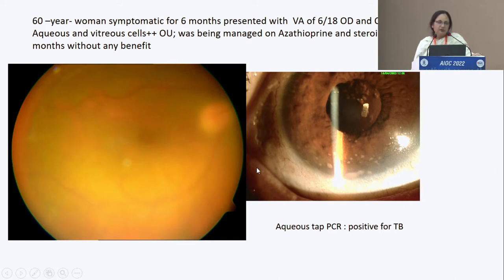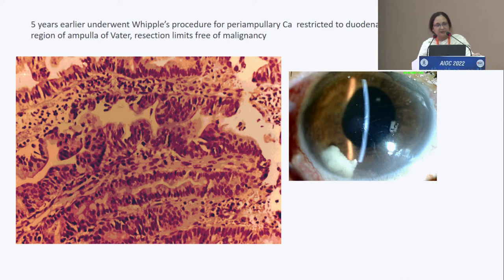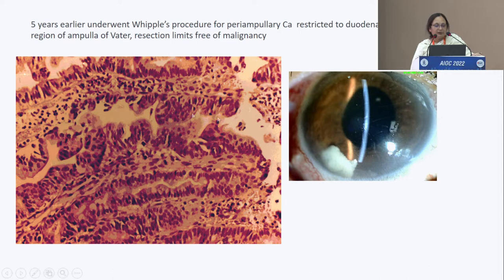Aqueous tap PCR came positive for tuberculosis. However, the patient gave a history — five years earlier she had undergone Whipple's procedure for periampullary carcinoma, and the carcinoma was restricted to the duodenum. This is a case where you are not really thinking of TB, you are thinking of a masquerade, and the test for TB comes positive.